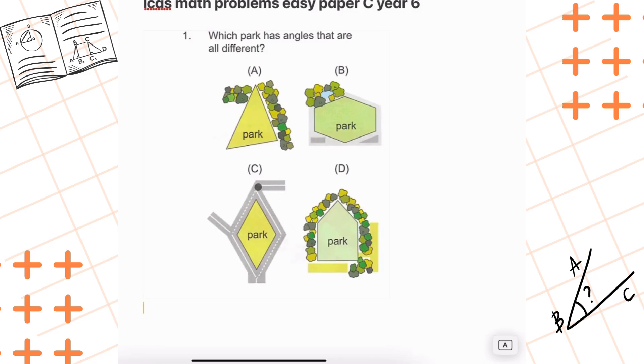Now park B looks like a hexagon, which usually has angles that are all the same. That's because a regular hexagon has six equal sides. As you can see, we have one, two, three, four, five, six equal sides on park B. So that's not the one we're looking for.